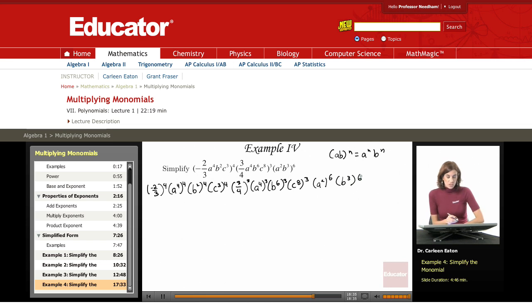Next, I'm going to use my rule about a power raised to a power. So a to the m to the n equals a to the m times n.